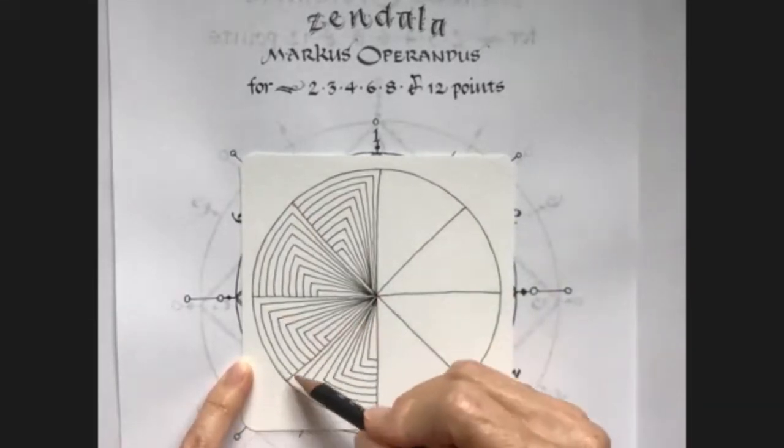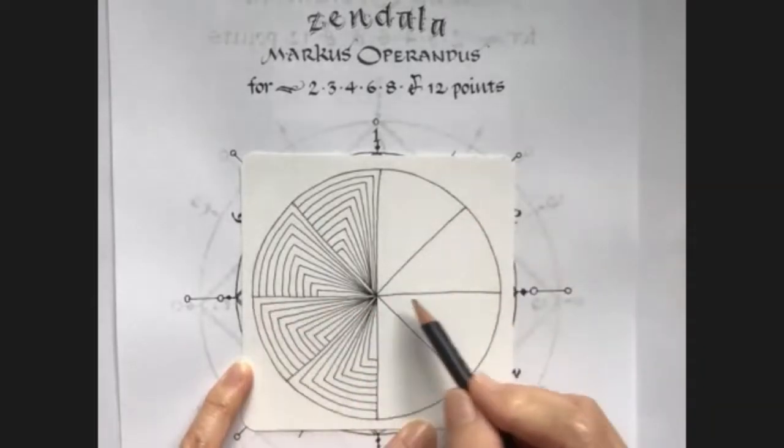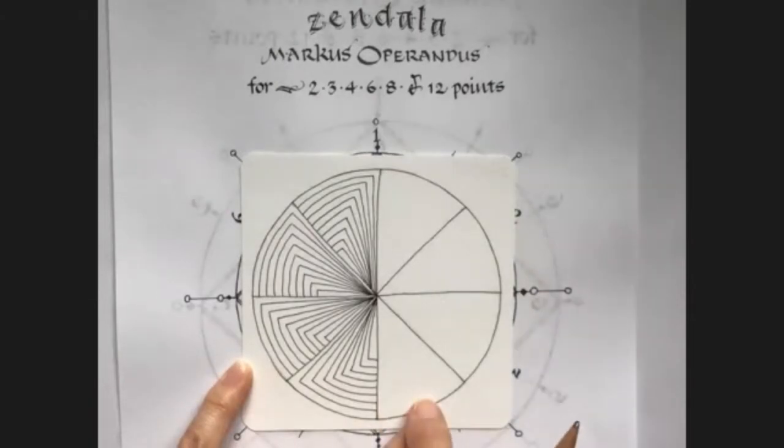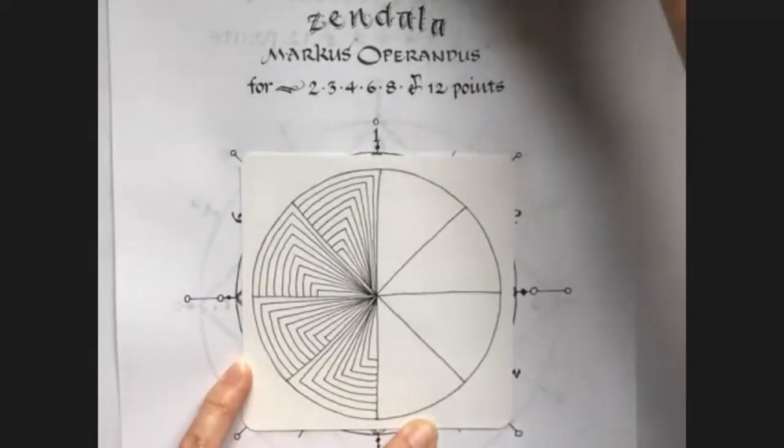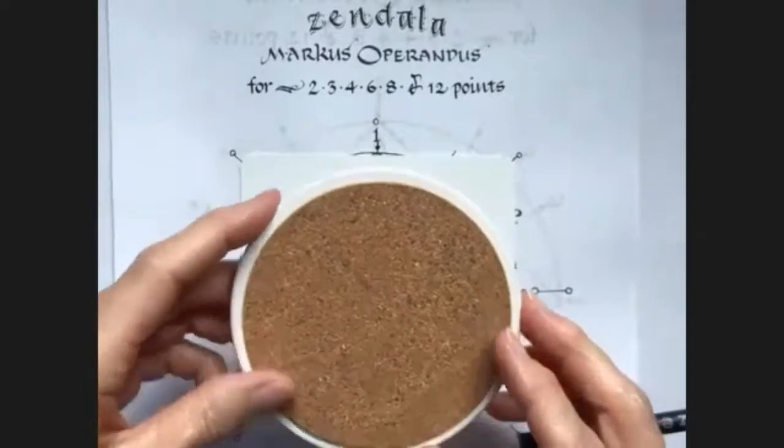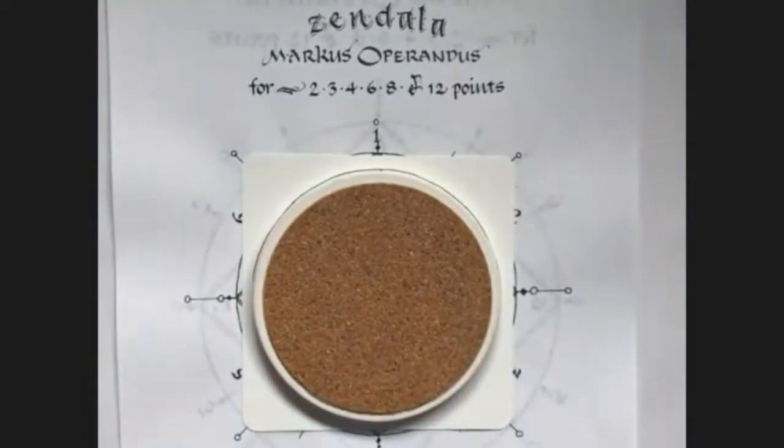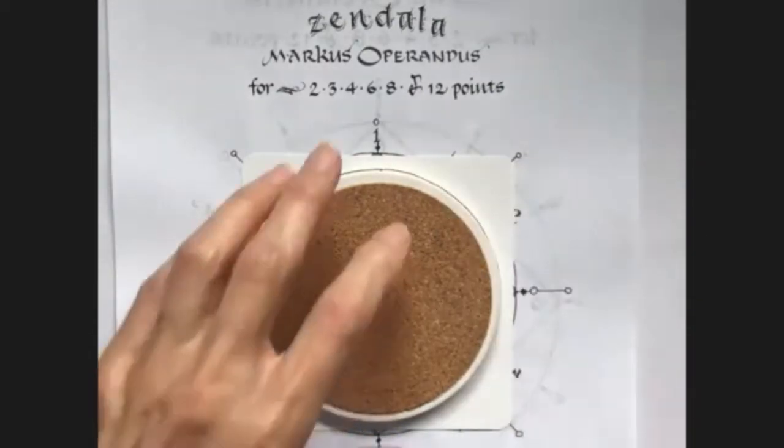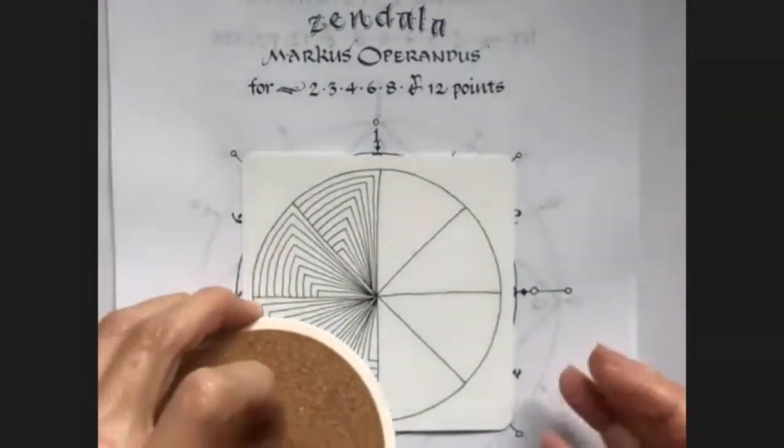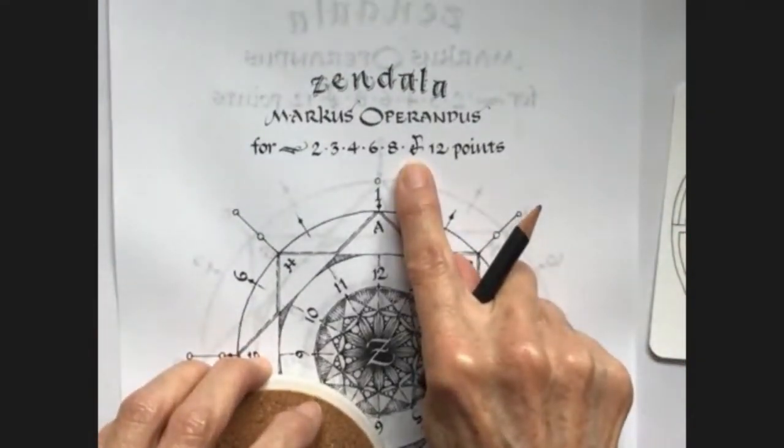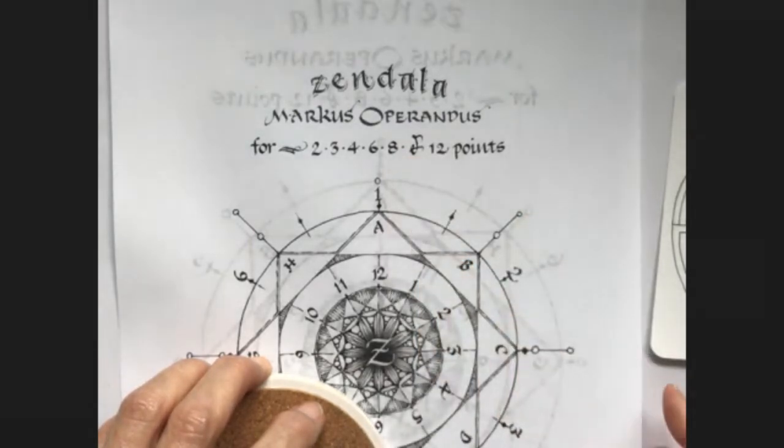And then, I just put a little mark on here where each of these come across, where these line up. And then, I did a line across each one to separate it. The way that I did the circle was I used a coaster that happened to just fit on here. The Marcus Operandus is available on the Zentangle website.